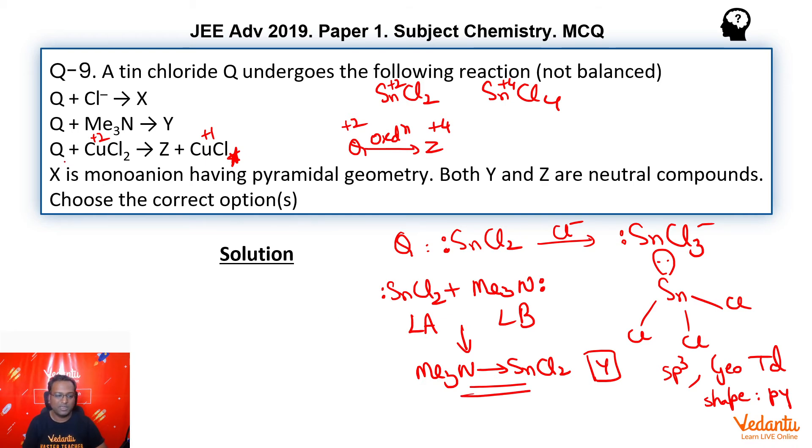We just solved that one. That was Q. This is Q, and Z was what? Z was SnCl₄, so it has no lone pairs on it.